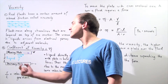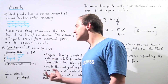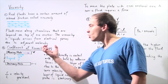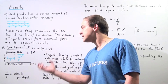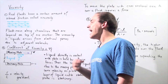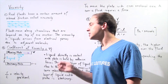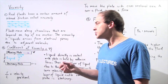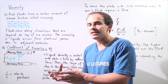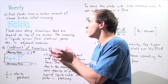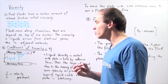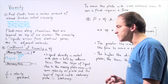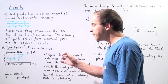Let's discuss something known as the coefficient of viscosity, which is given by the Greek letter eta. The higher the coefficient of viscosity, the more viscosity — the more internal friction we have in our fluid. We define it in the following manner.